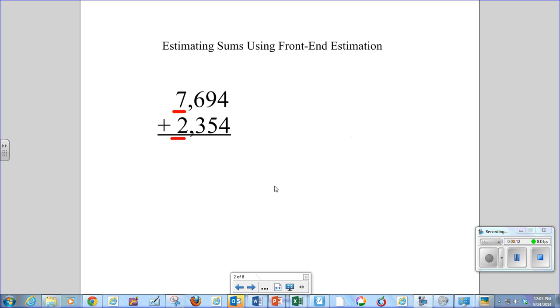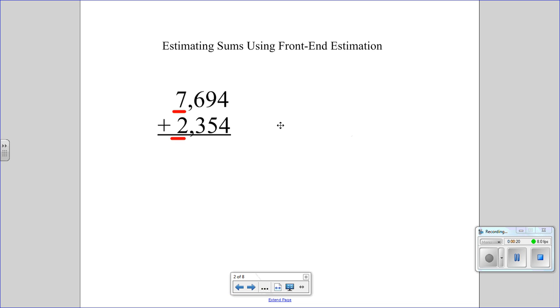Front-end estimation means that you look at the place values farthest to the left, and you just use those numbers to get your answer. So in this case, you would just do 7,000 plus 2,000 equals 9,000.